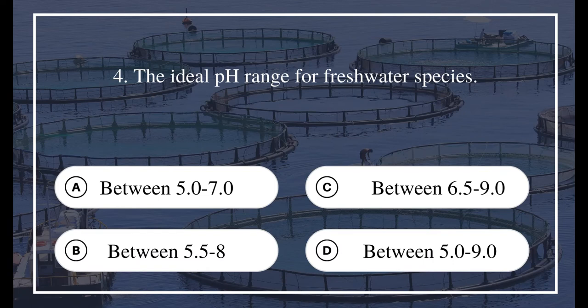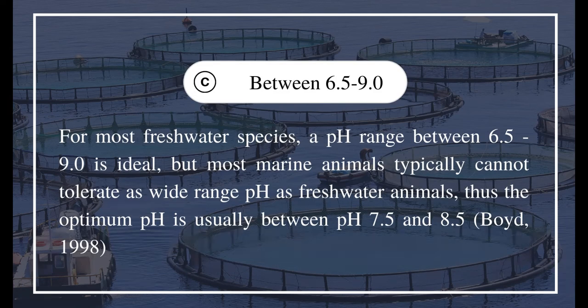Question 4: The ideal pH range for freshwater species. A) between 5.0 to 7.0, B) between 6.5 to 8.0, C) between 6.5 to 9.0, D) between 5.0 to 9.0. The answer is C) between 6.5 to 9.0.